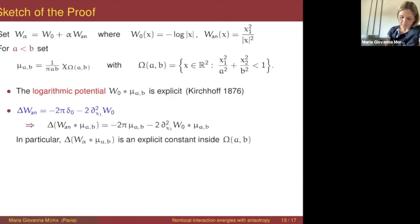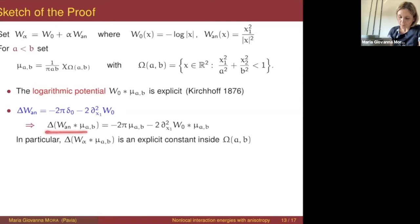The good news is that the logarithmic part of the potential — the convolution of the logarithm with the characteristic function of an ellipse — is explicit. This is due to Kirchhoff and is a well-known formula in fluid mechanics. For the anisotropic part, it turns out that our anisotropy is related to the Coulomb kernel: if we compute the Laplacian of the anisotropic kernel, it involves second derivatives of the Coulomb kernel. So if we compute the Laplacian of the anisotropic potential of μ, we get a constant times μ and then second derivatives of the logarithmic potential.